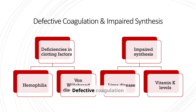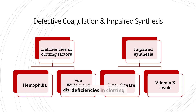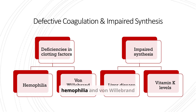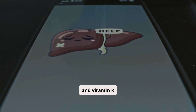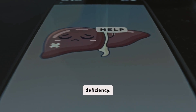Defective coagulation and impaired synthesis can be due to deficiencies in clotting factors, such as in hemophilia and von Willebrand disease (VWD), or impaired synthesis, such as in liver disease and vitamin K deficiency.